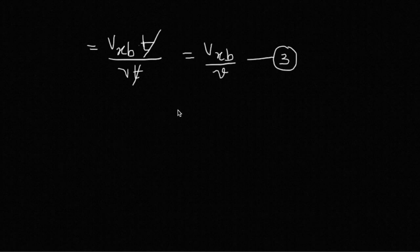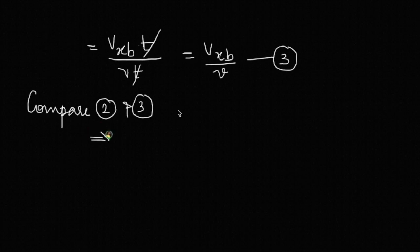Now we may compare equations 2 and 3 because both are equations in theta. Equation 2 says theta was lambda by delta x, and equation 3 says it is vxb by v, so equating them.